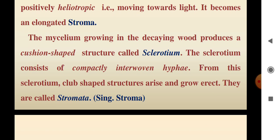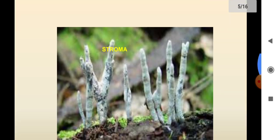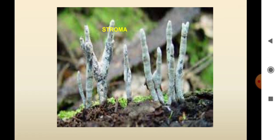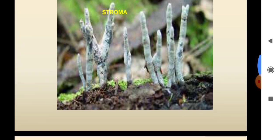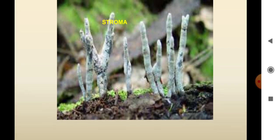The sclerotium is an intermittent, irregularly branched structure called stroma. The sclerotium consists of compactly interwoven hyphae. From this sclerotium, club-shaped structures arise and grow erect — these are the stromata. The stroma is produced from the underground sclerotium.